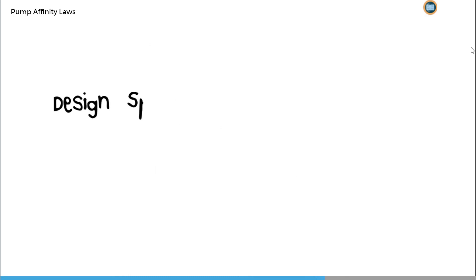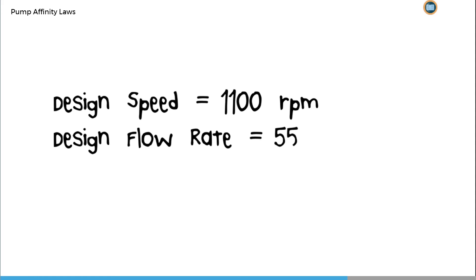We will know the design speed, flow rate and head for our pump. Let us assume in this case, it is 1100 revolutions per minute, with design flow rate of 5500 m³ per hour, and head of 155 m.